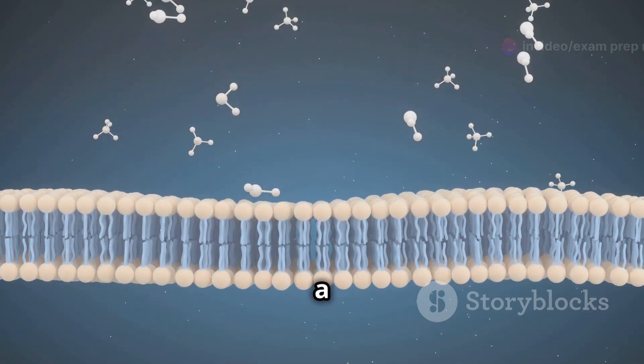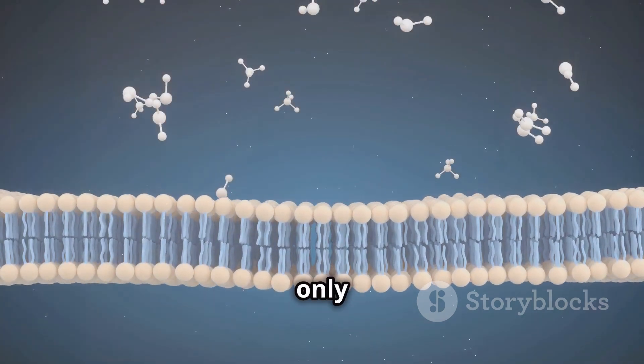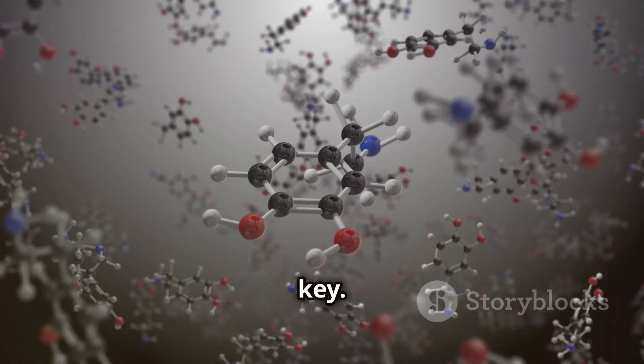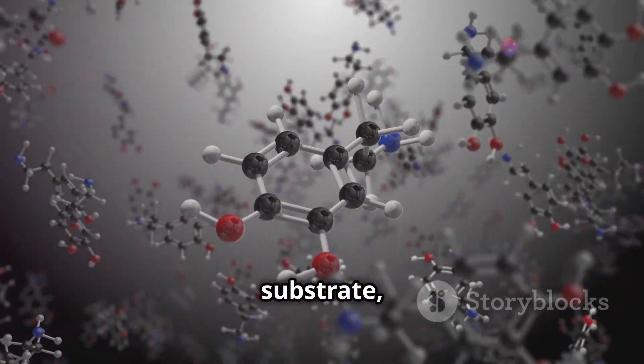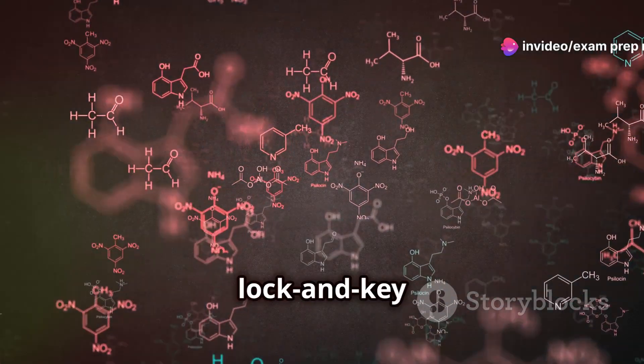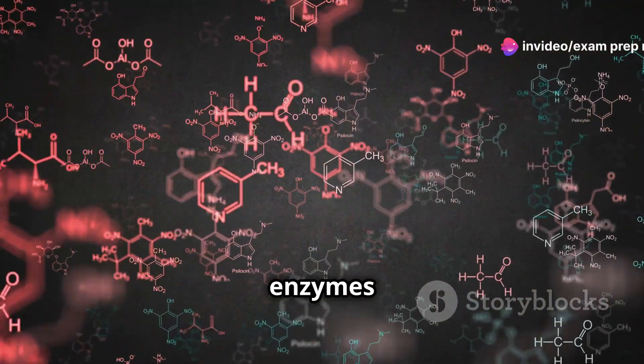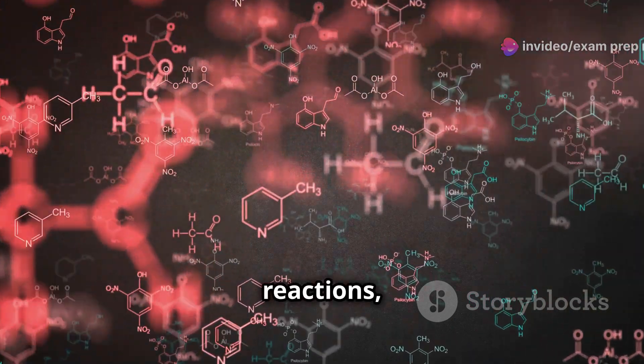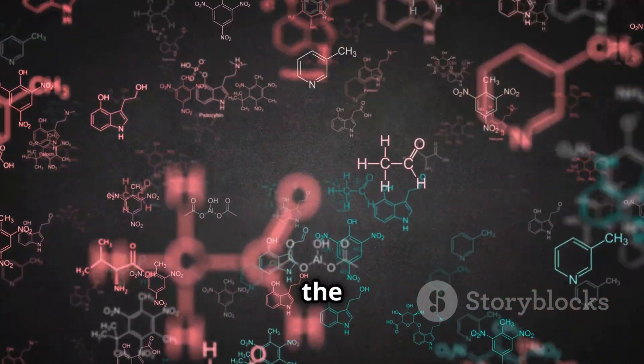Each enzyme has a unique shape, like a lock that only fits a specific key. This key is the enzyme's substrate, the molecule it acts upon. This lock and key model ensures that enzymes only catalyze very specific reactions, preventing chaos within the cell.